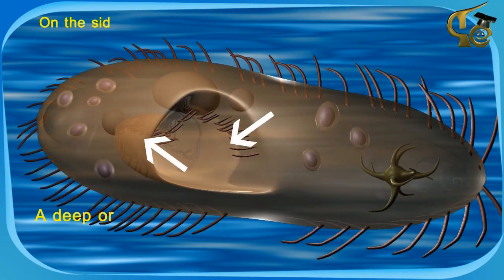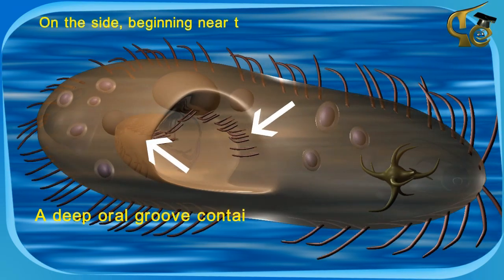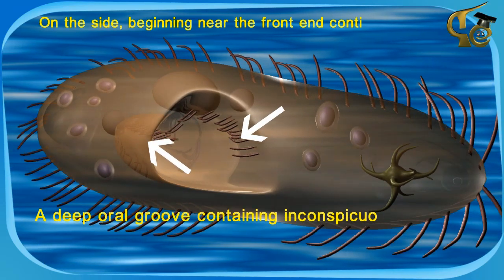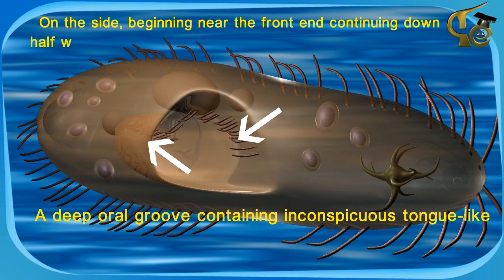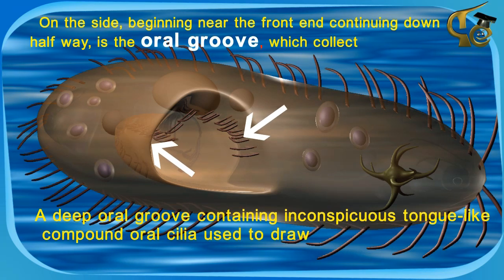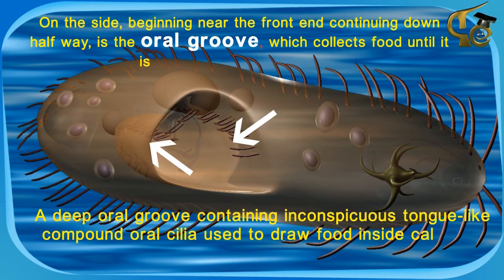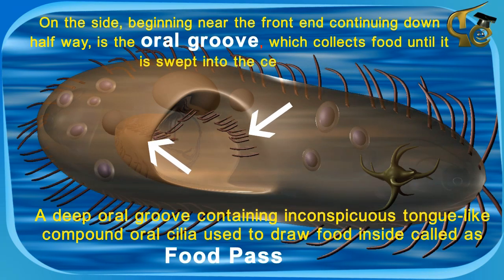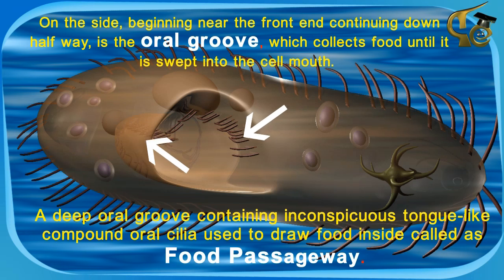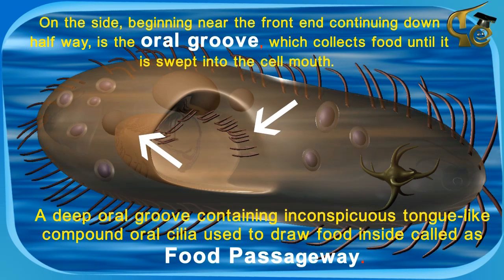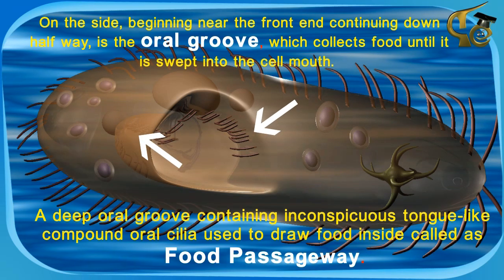On the side, beginning near the front and continuing down halfway, is the oral groove which collects food until it is swept into the cell mouth. A deep oral groove contains inconspicuous tongue-like compound oral cilia used to draw food inside, called the food passageway.